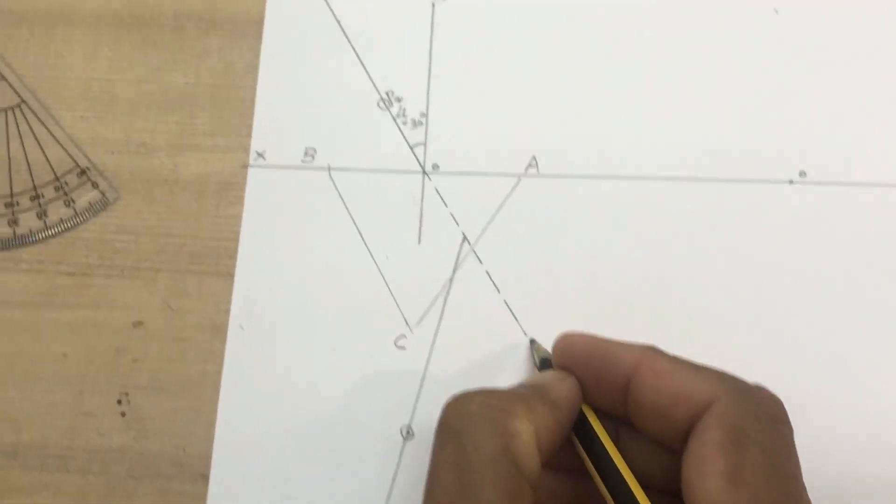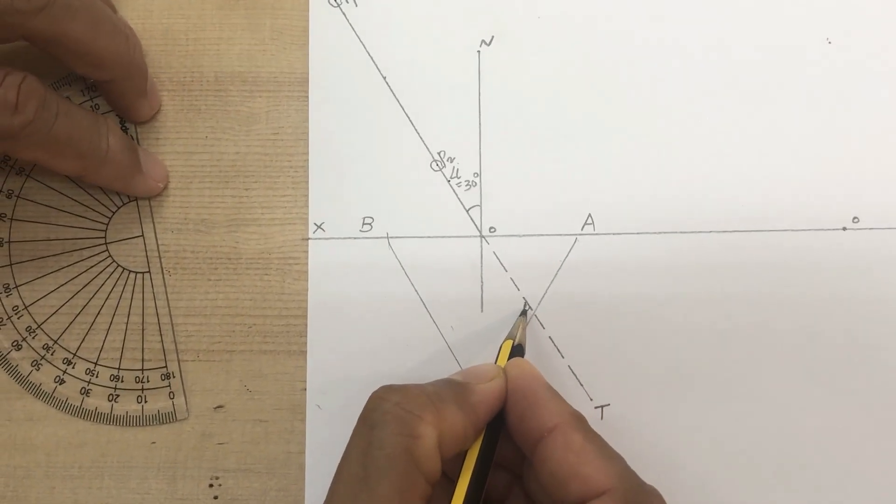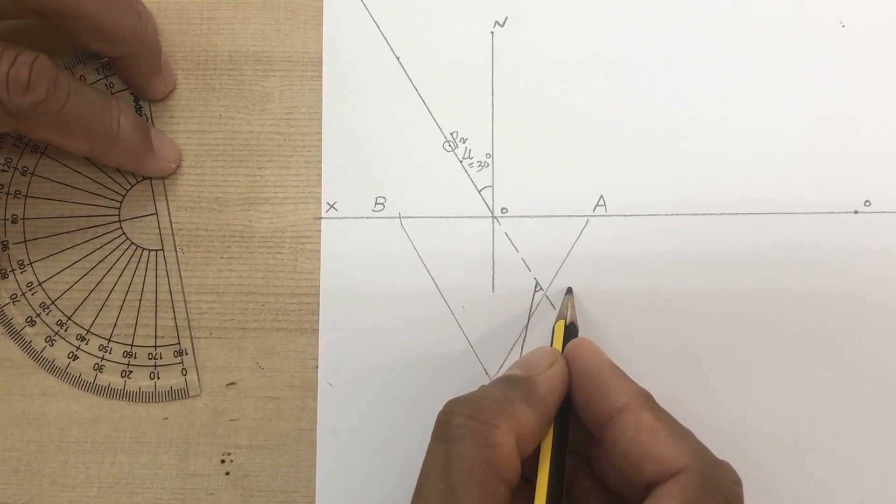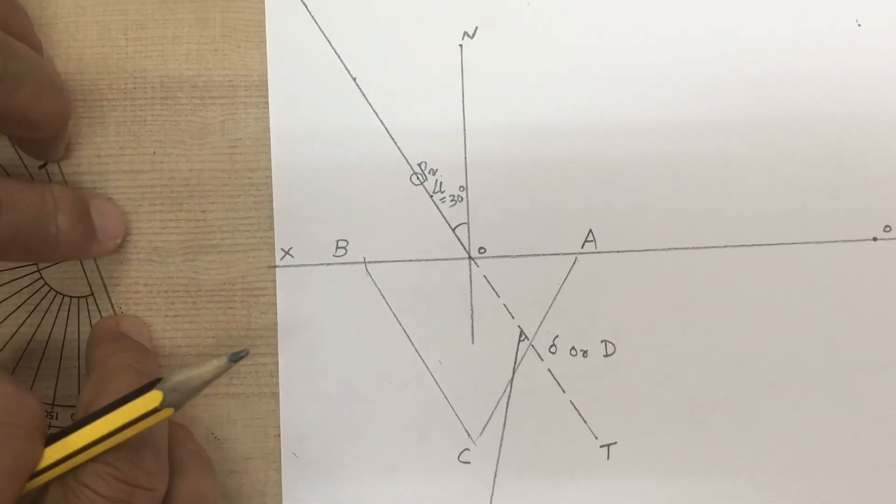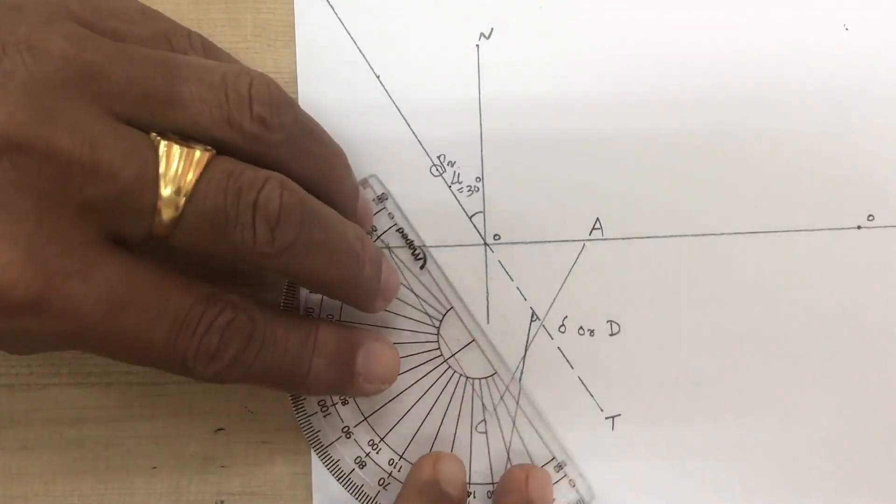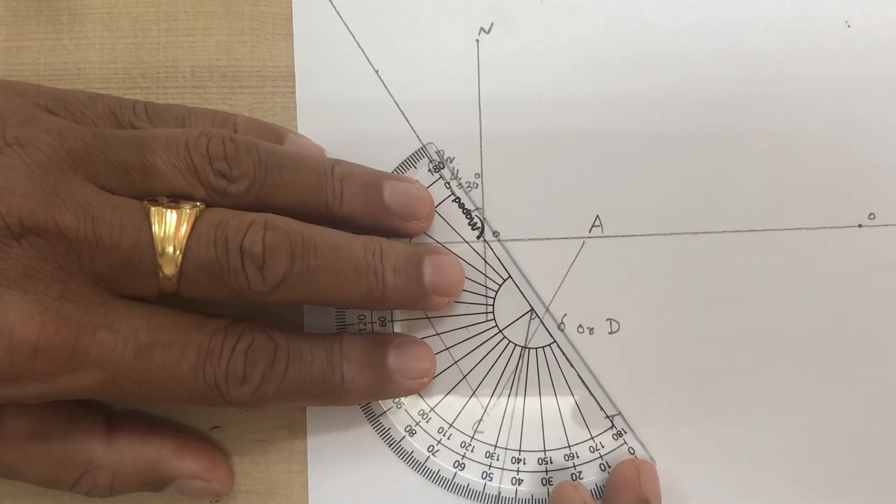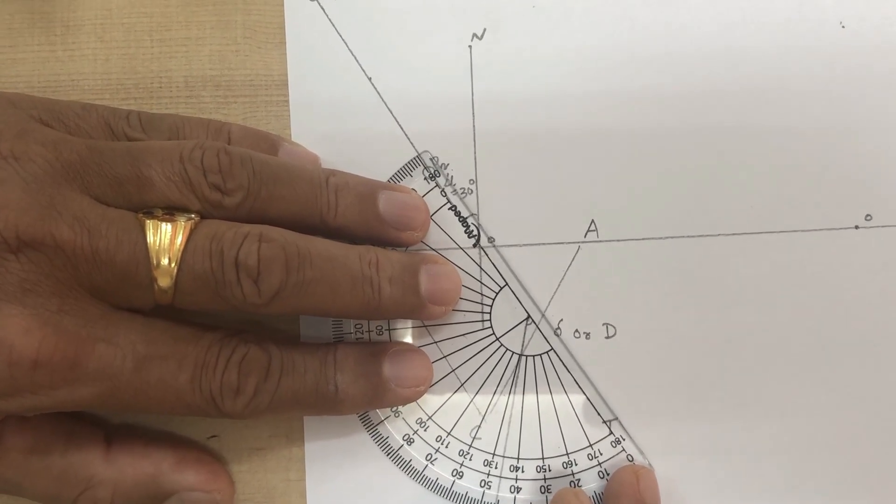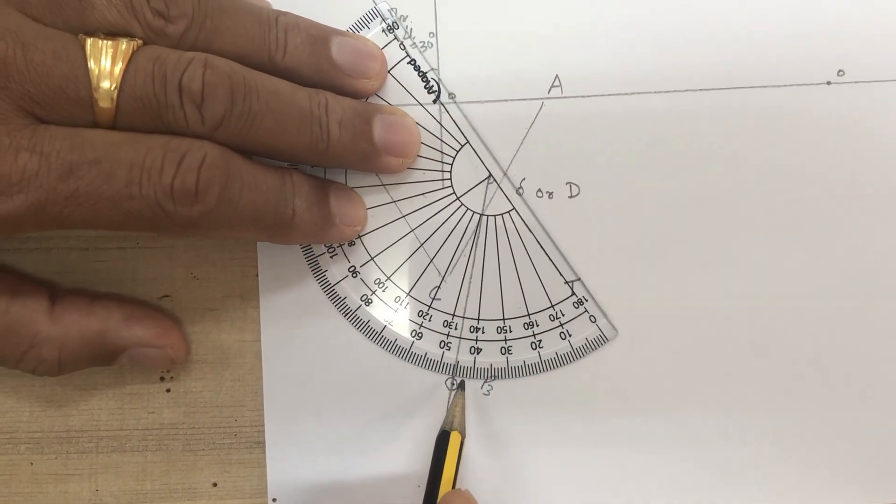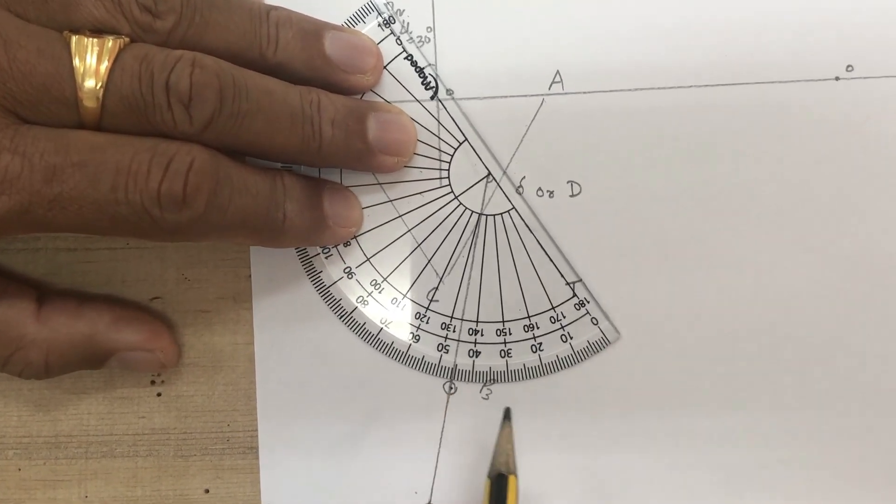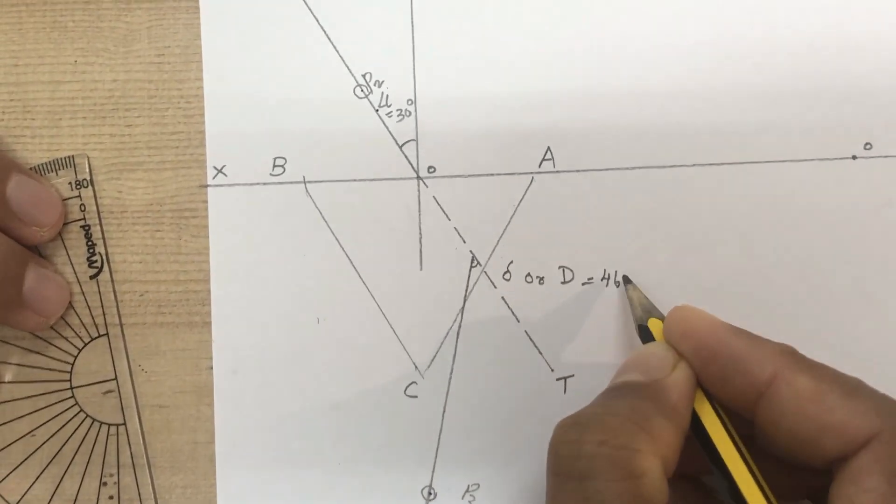Now, this incident ray is PO. This angle can be called as delta or D which represents angle of deviation. Keep the protractor at this point and measure the angle. You can see here now we have got an angle of 46 degree. That means the D is equal to 46 degree.